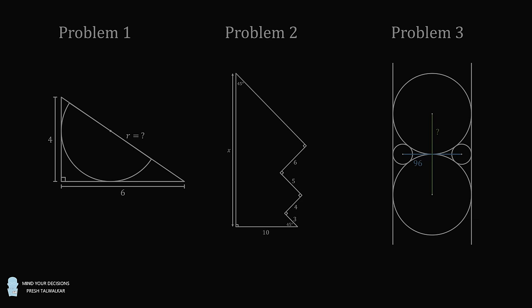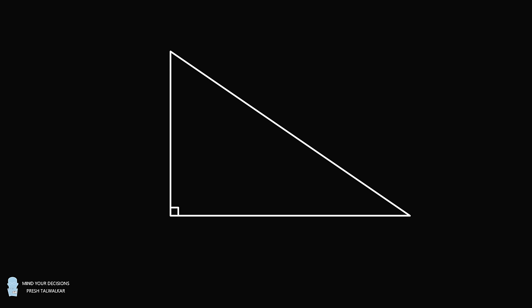Problem 1. A right triangle has legs that are equal to 4 and 6. A semicircle has its center on the hypotenuse and is tangent to both legs. What is the radius of the semicircle equal to? I thank Ismut from Bangladesh for the suggestion.